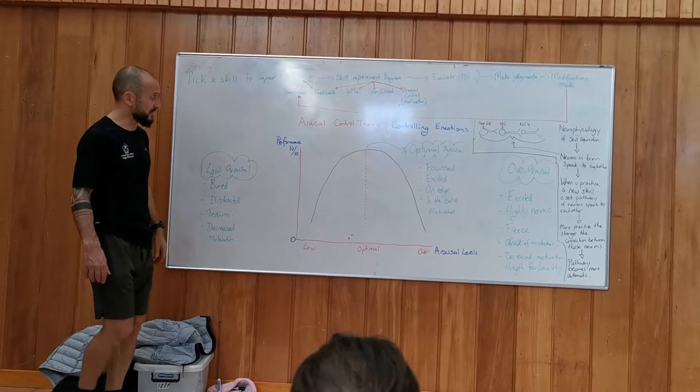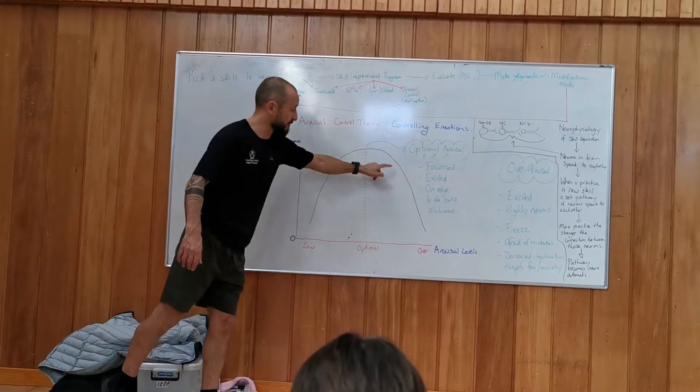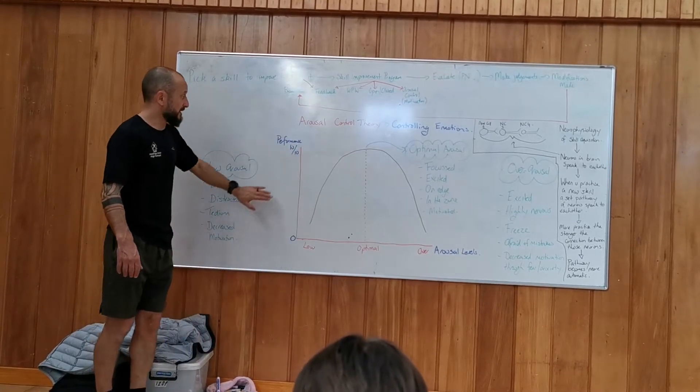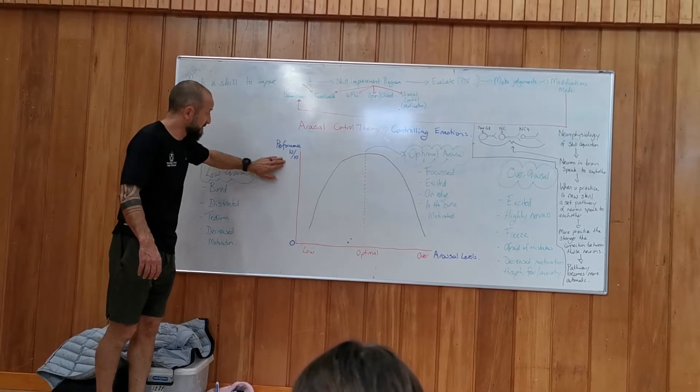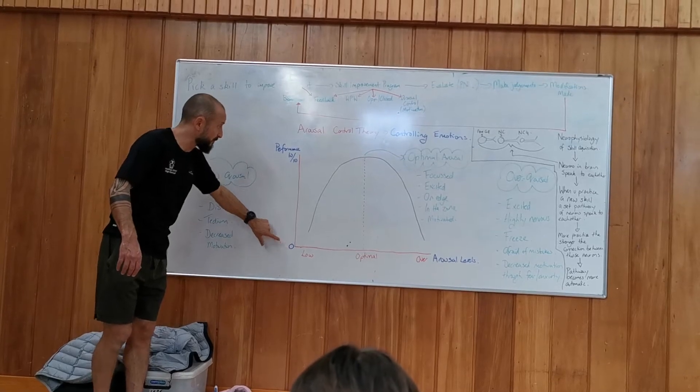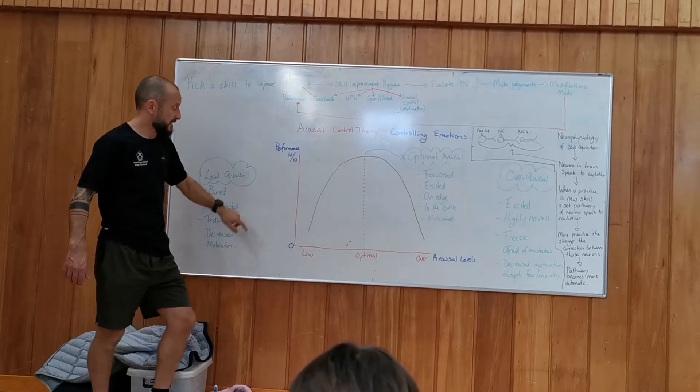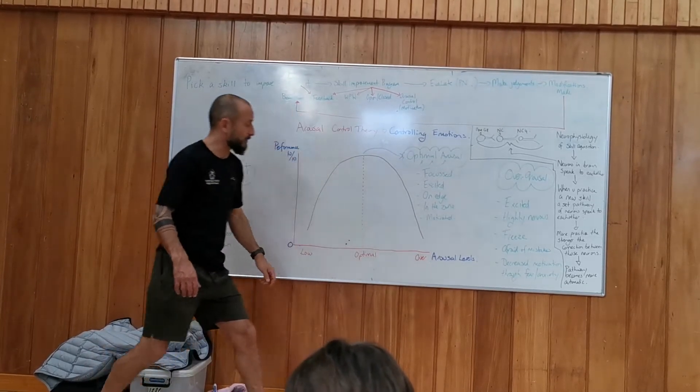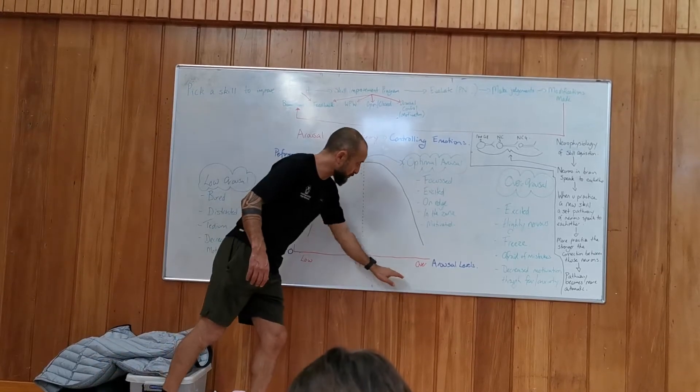Just to remind you, there's that inverted U theory of arousal control, where this axis is performance. Zero bad performance, 10 out of 10 performance. And the bottom one here was your arousal levels, low, optimal, and over.